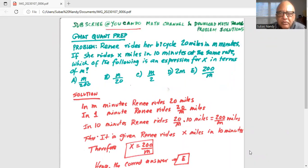Renee rides her bicycle 20 miles in M minutes. If she rides X miles in 10 minutes at the same rate, which of the following is an expression for X in terms of M? There are five alternatives.